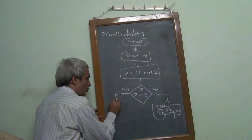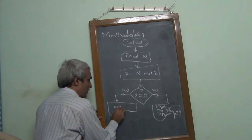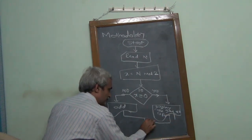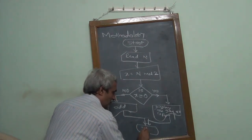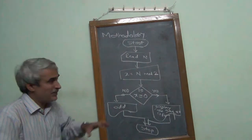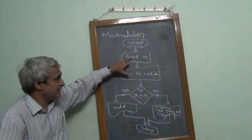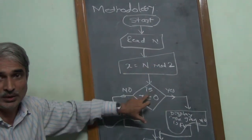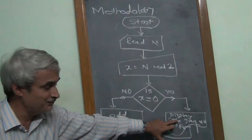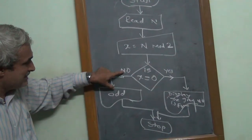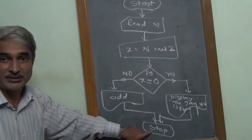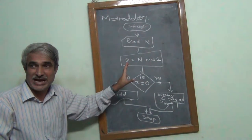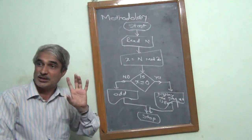If yes, we display a message: 'the given number is even.' If no, we display 'the given number is odd.' After displaying either message, you stop. So the flowchart logic is: start, read N, find N mod 2, check if X equals 0 — if yes, even; if no, odd — then stop.